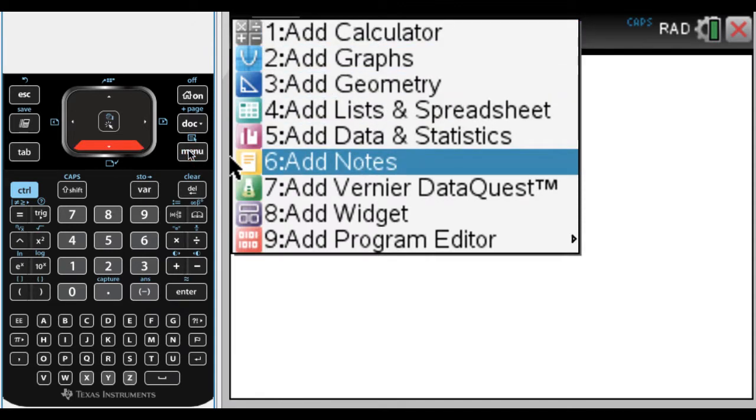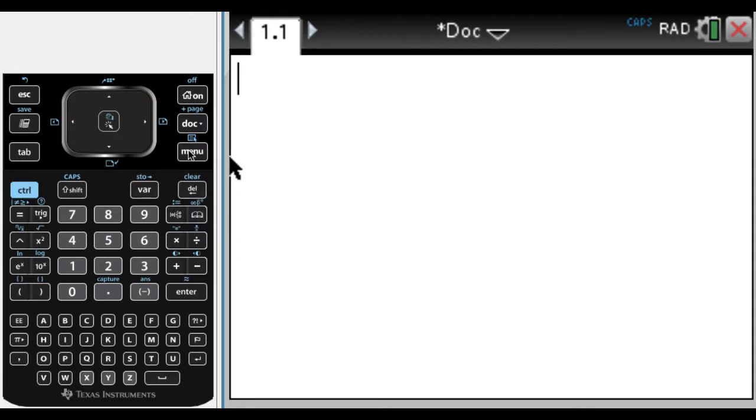It's menu, and then option six is notes. What I'm going to do is take advantage of something the calculator has called math boxes, and they are these fields that kind of dynamically update everything, and it's pretty awesome.